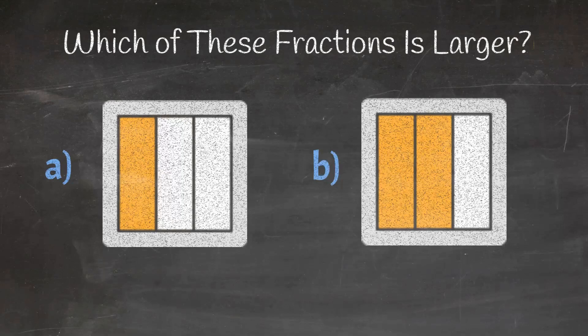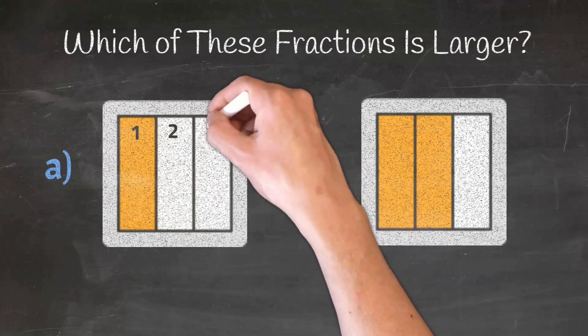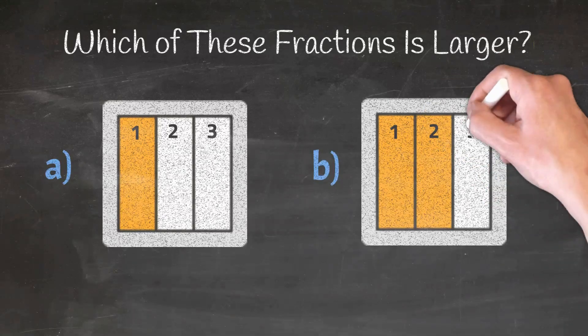Now let us solve this problem by first counting the total number of available sections. Here, one, two, and three. And in fraction B again one, two, and three.